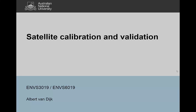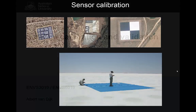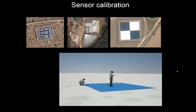Hello, this is Albert van Dijk and in this video I want to talk about satellite calibration and validation. You might ask yourself how can we measure reflectances as accurately as we can — how do we have a reference for that? Because we can measure how much light is coming back at the satellite, but we can't necessarily measure how much light came from the Sun in the first place. So how do we do that?